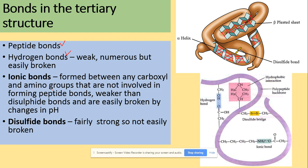There are also two new bonds: ionic bonds and disulfide bonds. Disulfide bonds are the strongest bonds, and ionic bonds are formed between any carboxyl and amino groups that are not involved in forming peptide bonds. Ionic bonds can be more easily broken than disulfide bonds.